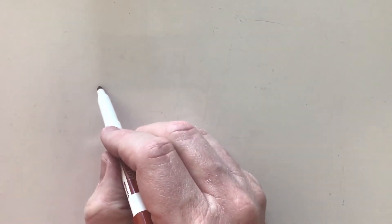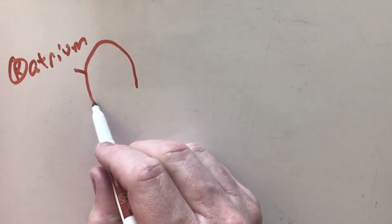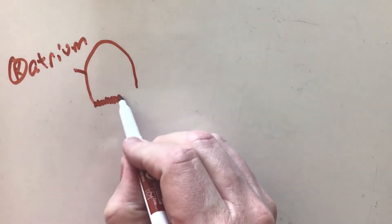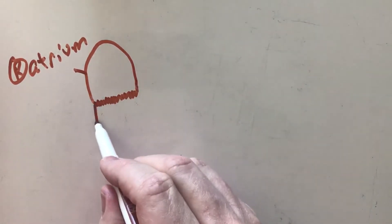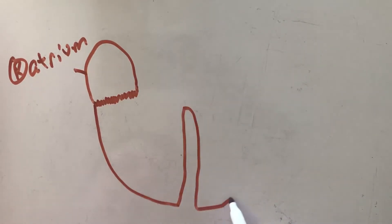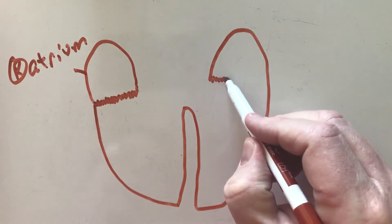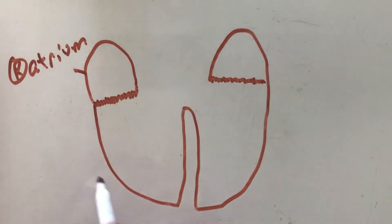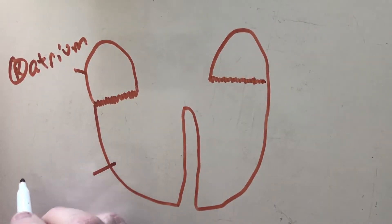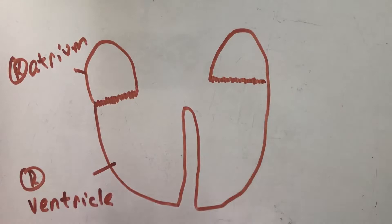Let's take a look at the heart. The first thing I'm going to draw is the right atrium — that's basically where blood comes into the heart. Then we have the tricuspid valve, then the right ventricle. We also have something called the septum, then the left ventricle, and then the mitral valve or bicuspid valve.